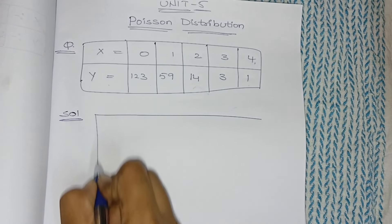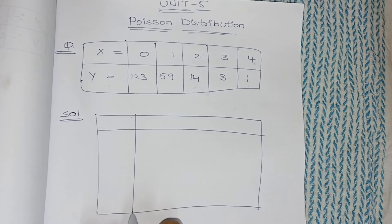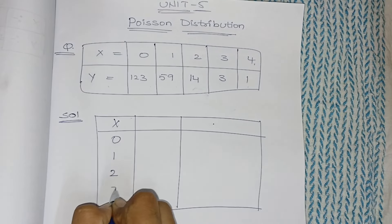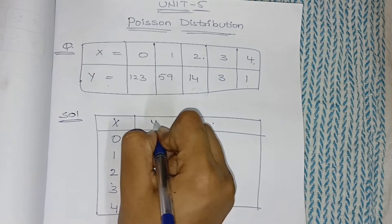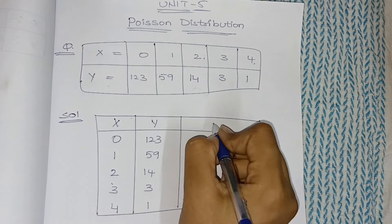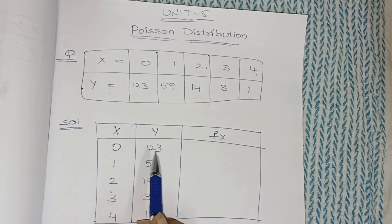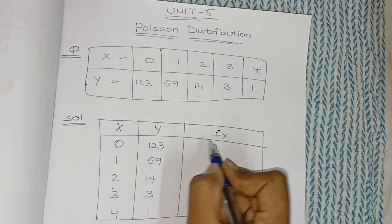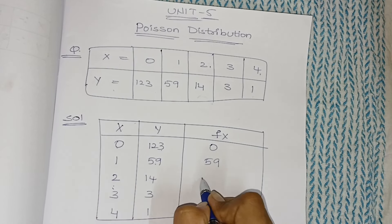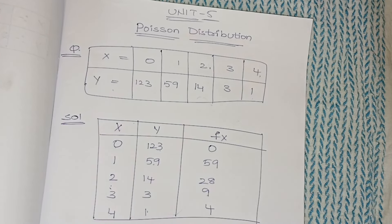The first step is to do the table part. The columns you will have are: x column, y column, and fx column. x is 0, 1, 2, 3, 4 and y column is 123, 59, 14, 3, 1. Next you need to calculate fx, which is x multiplied by y. So 123 × 0 = 0, 59 × 1 = 59, 14 × 2 = 28, 3 × 3 = 9, 1 × 4 = 4.